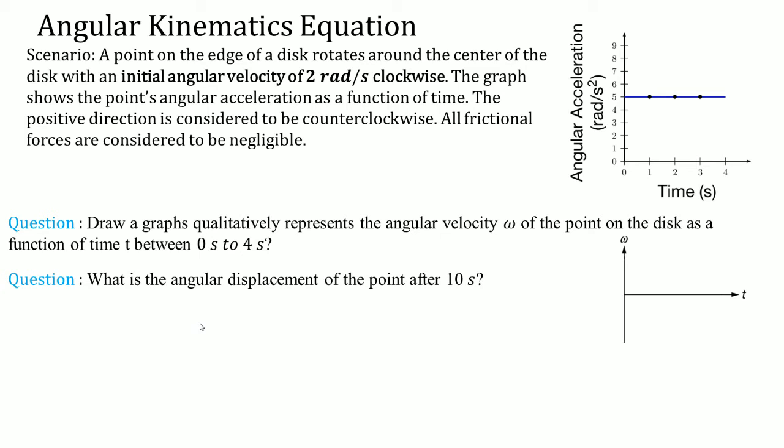And this is a very typical angular kinematics equation that comes from the AP Physics 1 exam. This is my version of it. A scenario is a point on an edge of a disc rotates around the center of the disc with an initial angular velocity of two rads per second clockwise. The graph here shows the point of the angular acceleration as a function of time. The positive direction, keyword here, positive direction, is going to be considered to be counterclockwise. All frictional forces are considered to be negligible. You're going to draw a graph representing the angular velocity omega of the point of the disc as a function of time between zero to four seconds. So this is the zero to four seconds here.